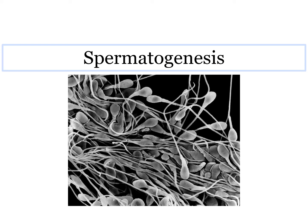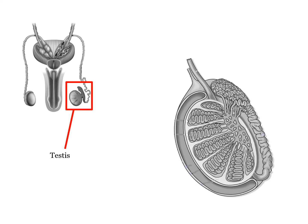Hi again students, let's continue with the next subtopic which is spermatogenesis. Spermatogenesis is a process of the origin and development of the sperm cells within the male reproductive organ, the testis. The testis are composed of numerous thin and tightly coiled tubules known as the seminiferous tubules. The sperm cells are produced within the walls of these tubules.